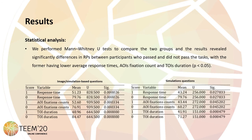Then we carried out a statistical analysis. We performed a Mann-Whitney U-test to compare the two groups, and the results revealed significant differences in response processes between participants who passed or did not pass the tasks, with the former having lower average response times, areas of interest fixation count, and areas of interest duration.